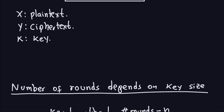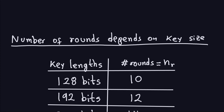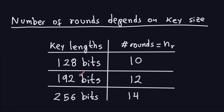Looking at this table, the number of rounds depends on the key size. The first column has all possible key lengths for AES and the second column has the number of rounds. With a 128-bit key, you do 10 rounds; with 192 bits, 12 rounds; and with 256 bits, 14 rounds. The number of rounds is not fixed — it depends on the key length. This is a symmetric cipher, so encryption and decryption use exactly the same key.